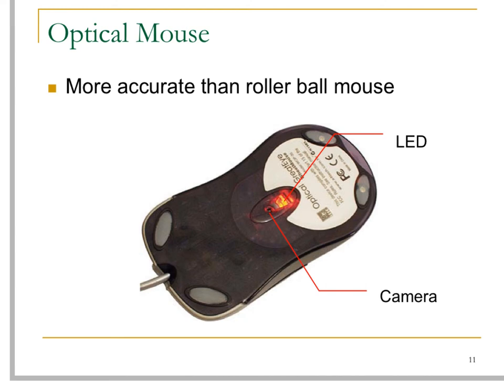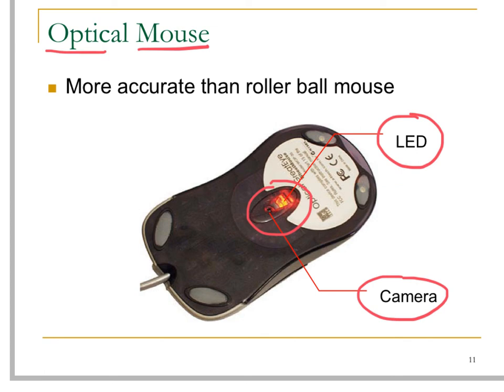The next input device is the optical mouse. It is a mouse which makes use of light to detect the movement of the mouse. At the bottom of the mouse, it has a camera and a LED to light up the table surface so that the camera can detect the movement of the mouse. Usually, it is more accurate than the traditional mouse which makes use of a roller ball.